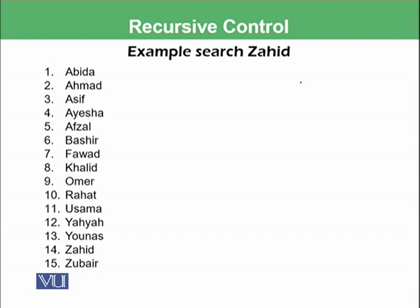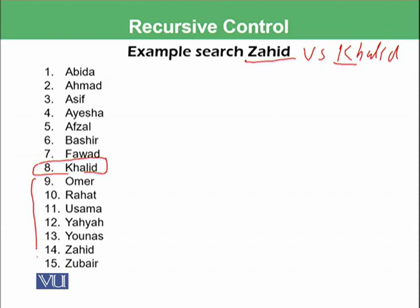Let's have these 15 names: Abida, Ahmed, Asif, Aisha, Afzal, Bashir, and so on, and we want to search for Zahid. First, we find the midpoint of this list, which is Khalid. We compare Khalid with Zahid. Since Z has a larger ASCII code than K, our required information lies in the sub-list after Khalid. That sub-list will be passed again to the search function, leaving the first half unsearched.